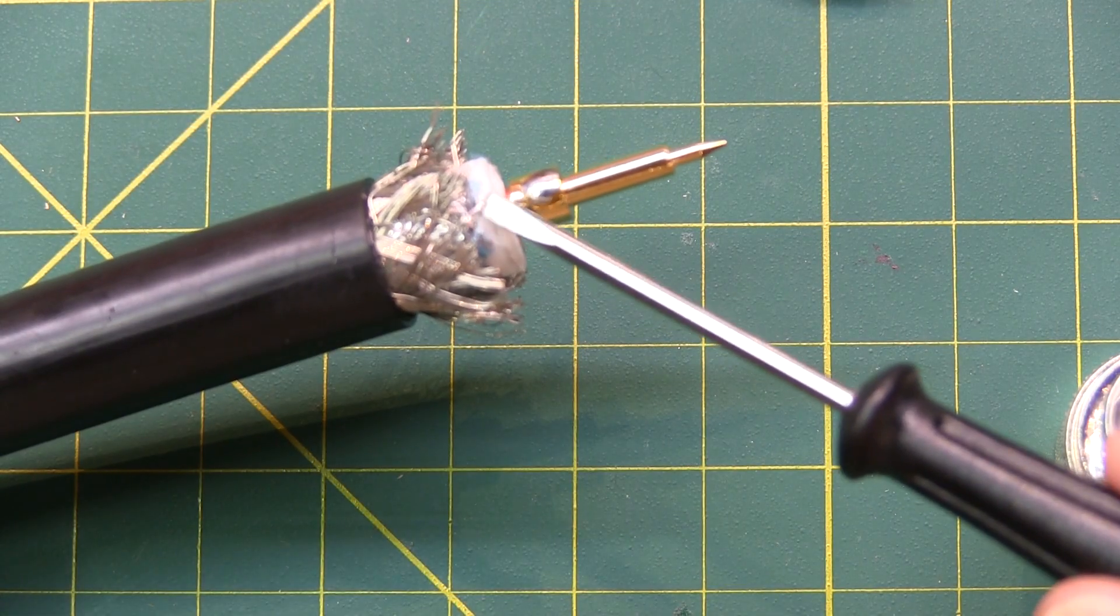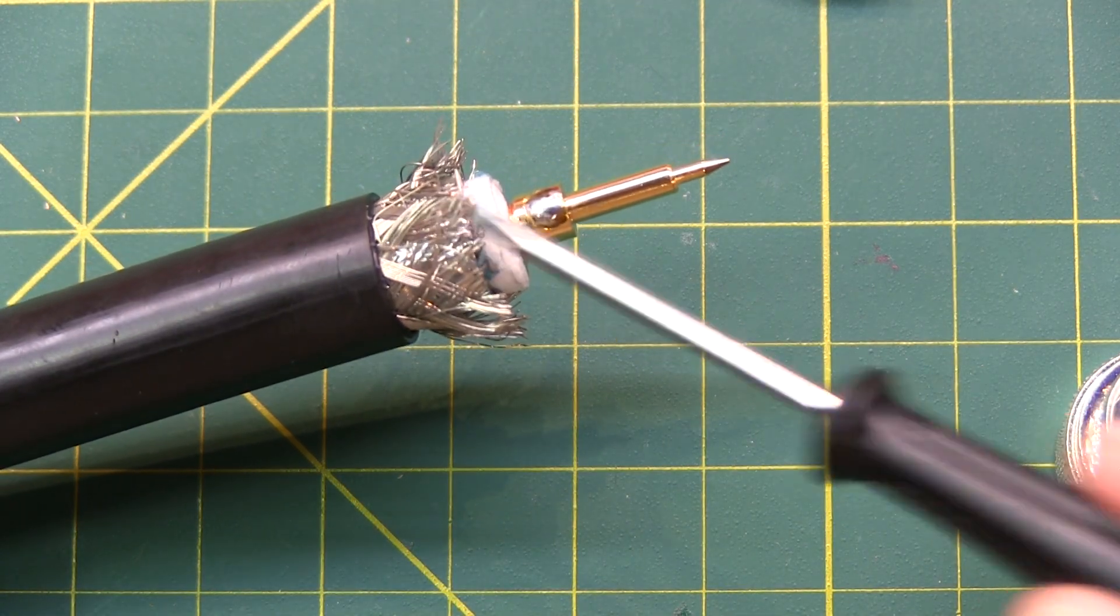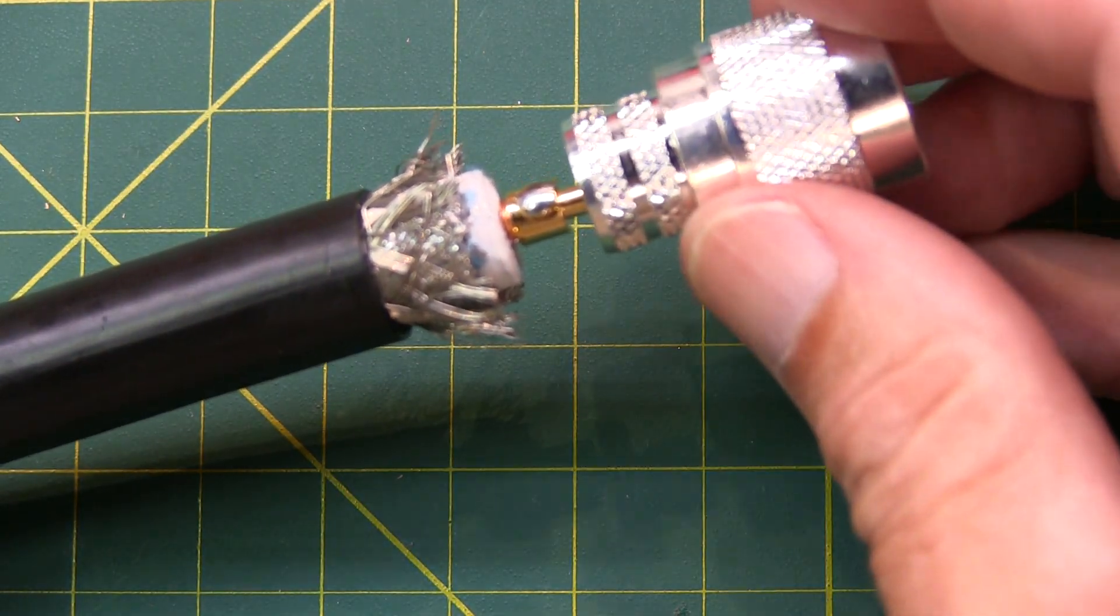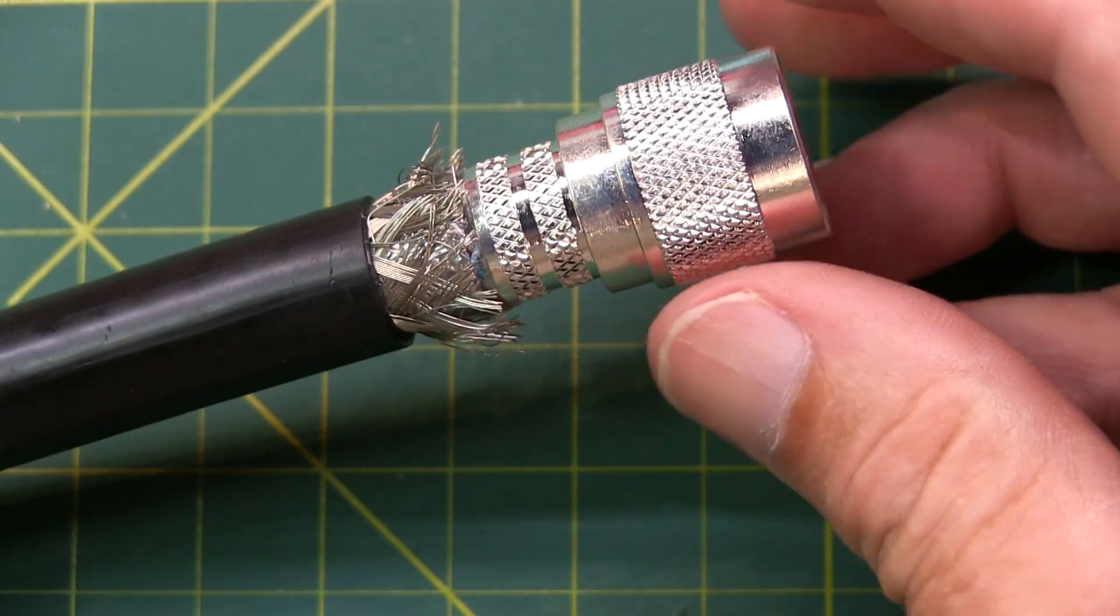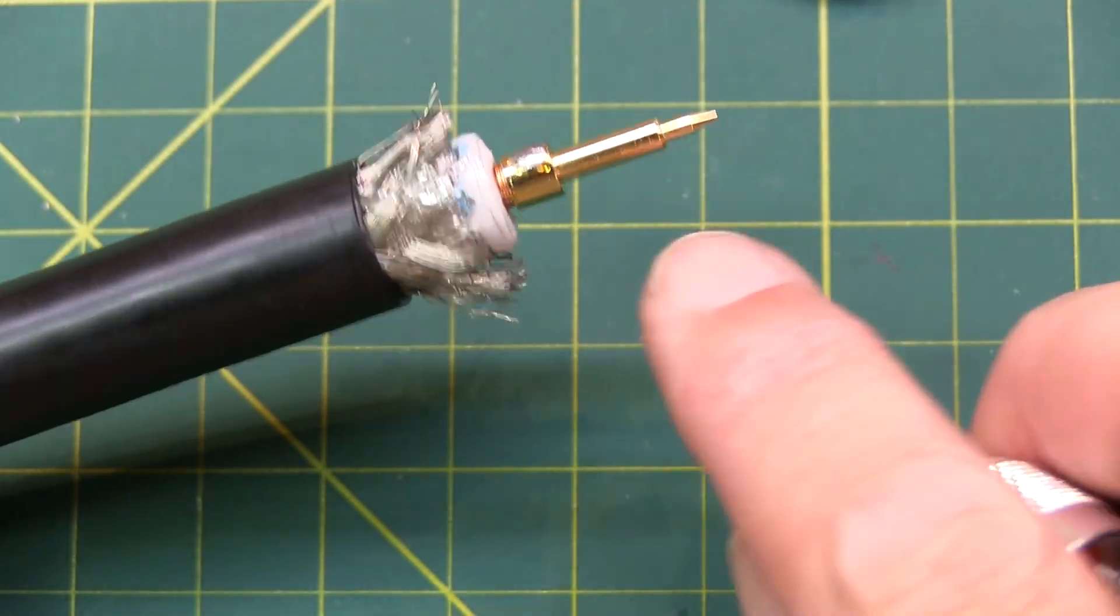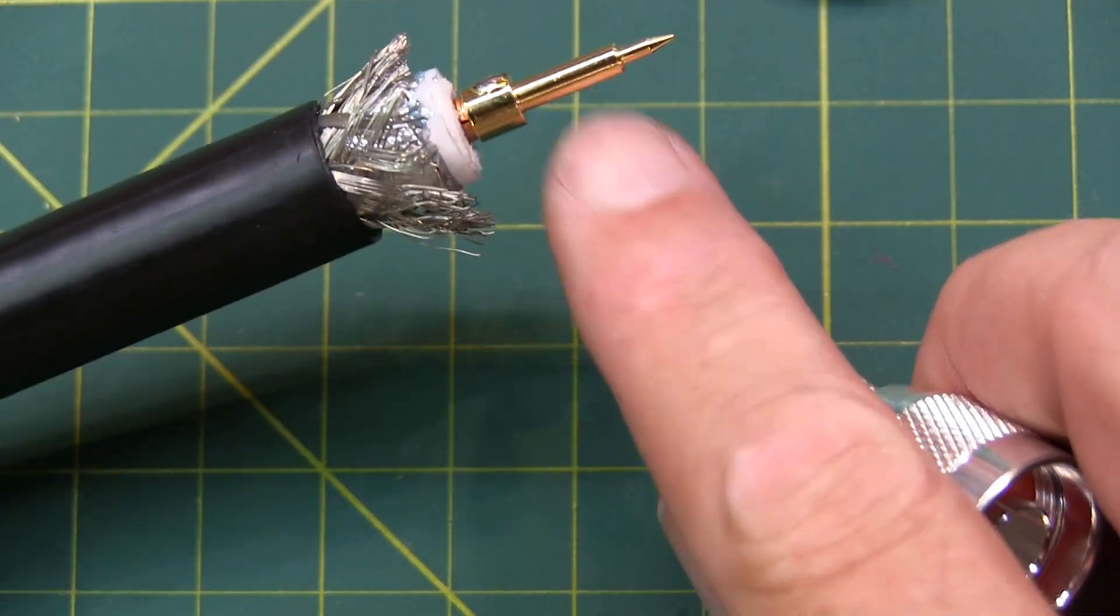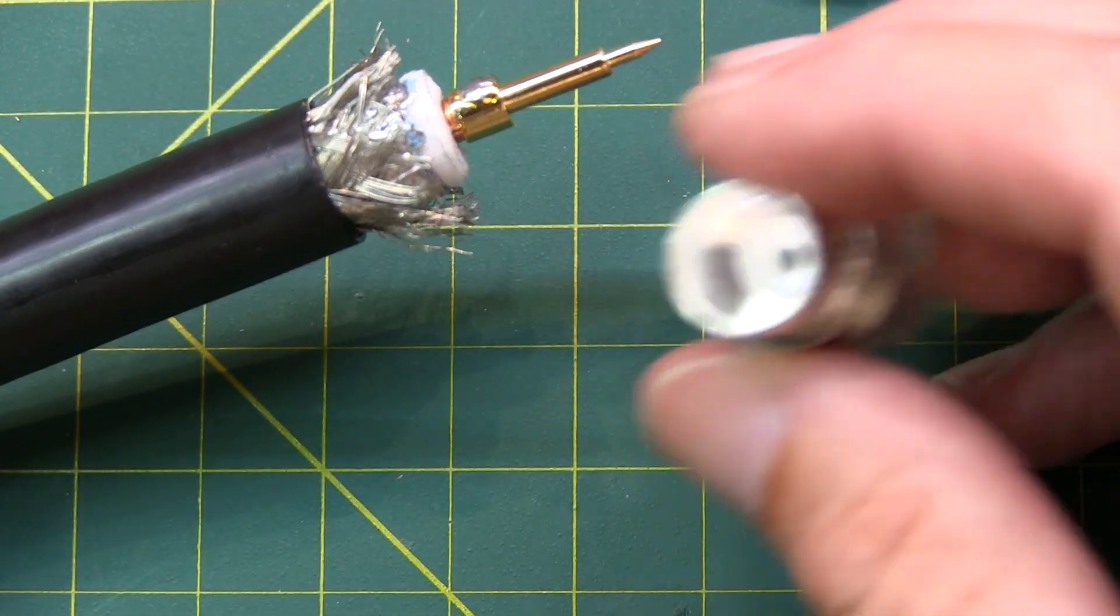Now's the time to check that you've got the braid all flared out so that you can insert the connector such that all the braid goes on the outside. Also make sure that you don't have any solder on this inner diameter of the center pin to prevent it from sliding all the way into the connector.